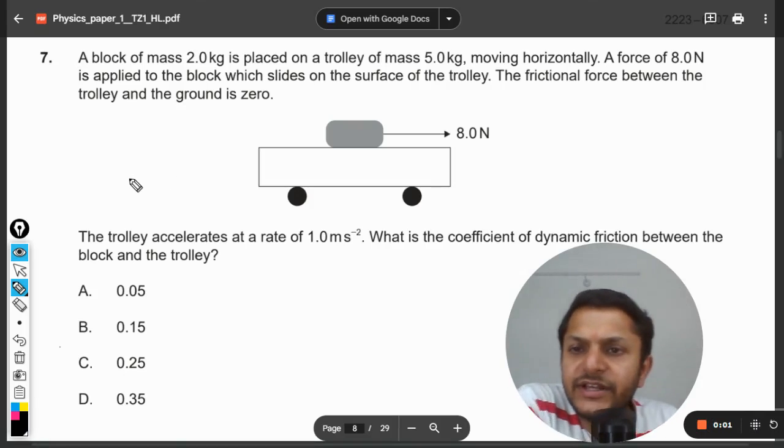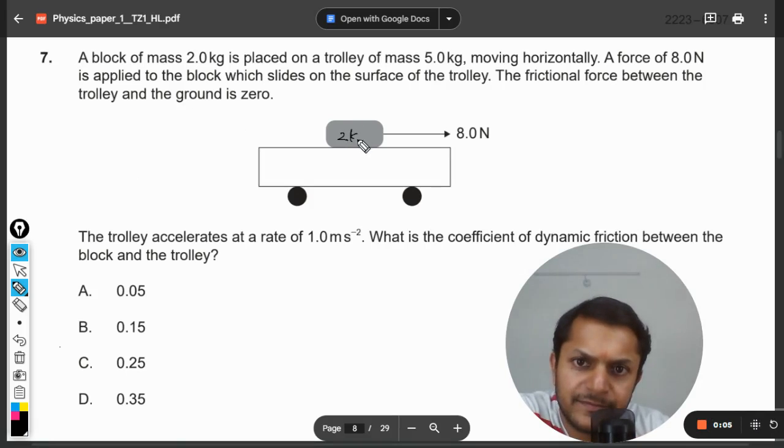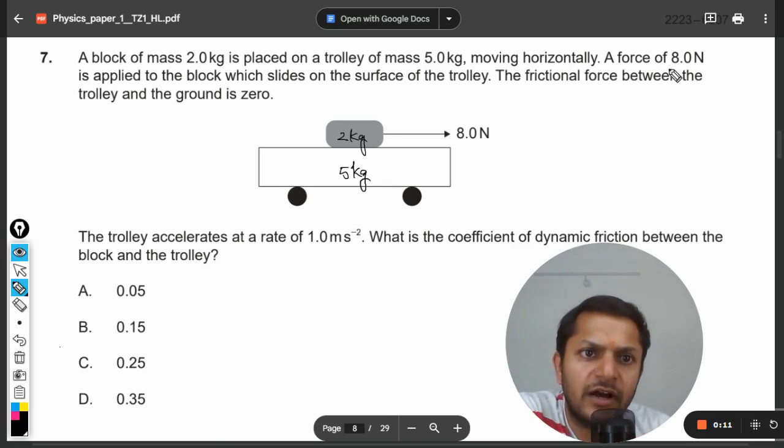Okay dear students, let's see what is there in this question. A block of mass 2 kg is placed on a trolley of mass 5 kg moving horizontally. A force of 8 Newton is applied on the block which slides on the surface of the trolley. The frictional force between the trolley and the ground is zero.